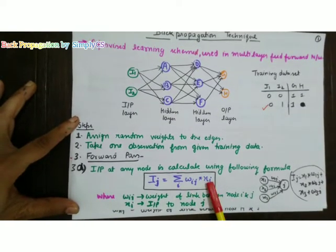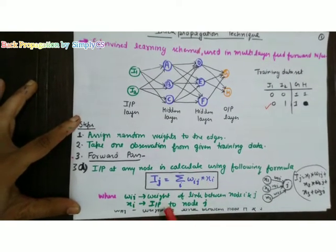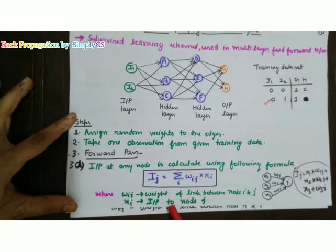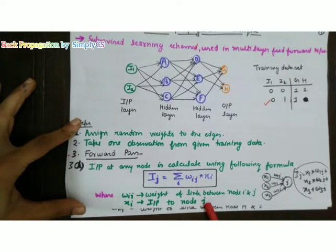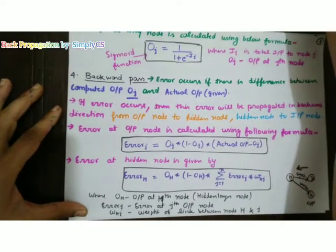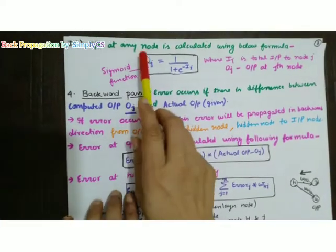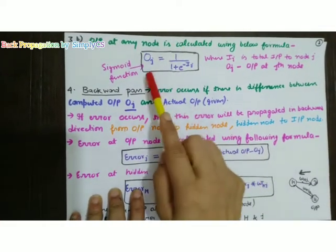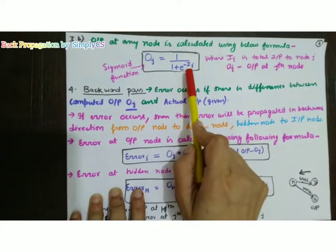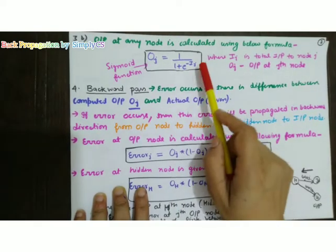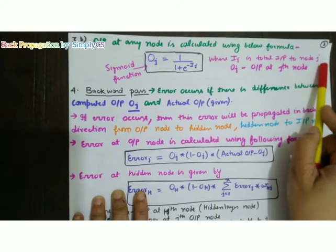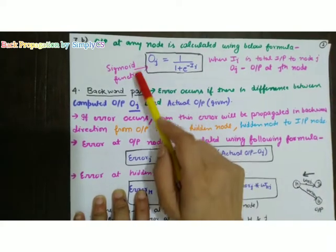In generalized form, we write: I_j equals the summation of W_ij (weight of the link between node i and j) multiplied by X_i (input to node j). For the output at any node, we use: O_j equals 1 over 1 plus e to the power minus I_j. Here I_j is the total input to node j. This is the sigmoid function formula.